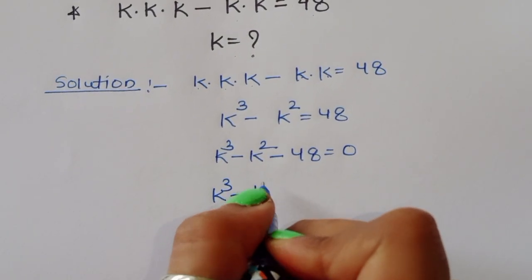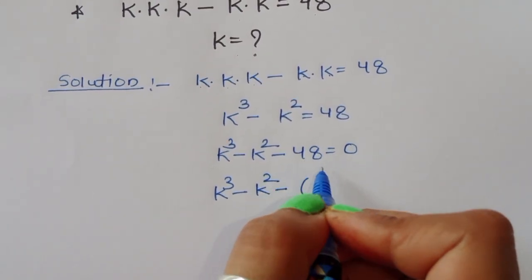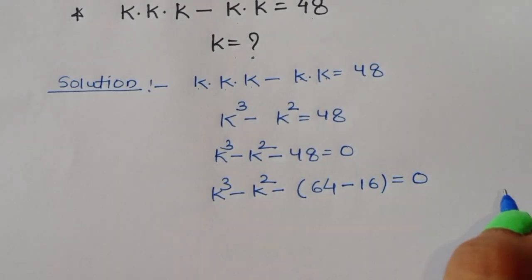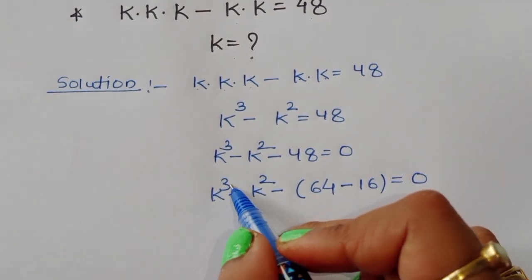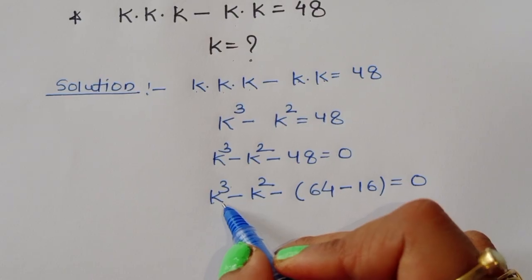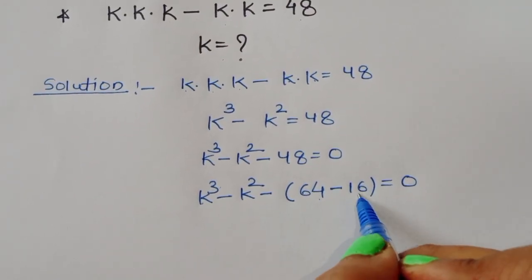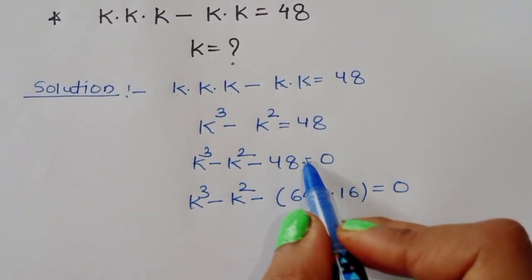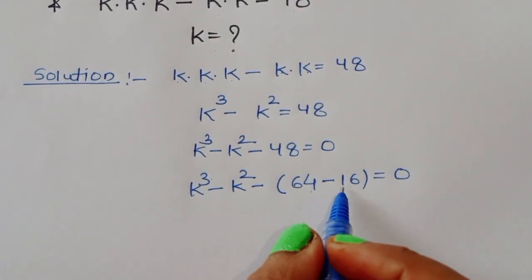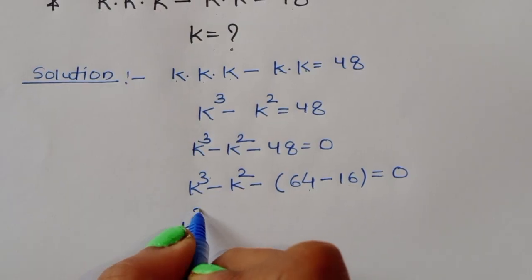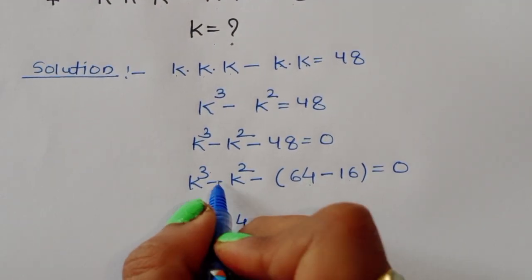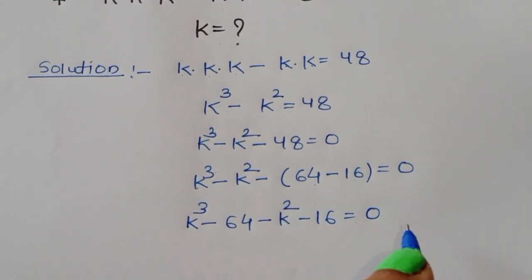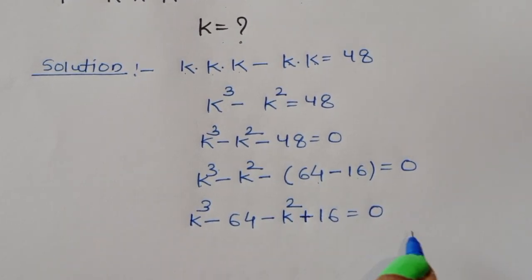We can write 48 as 64 minus 16. We use this because if k is 4, then 4 cubed is 64 and 4 squared is 16, and 64 minus 16 equals 48. So the equation becomes k cubed minus 64 minus k squared minus 16 equals 0, which rearranges to k cubed minus 64 minus k squared plus 16 equals 0.